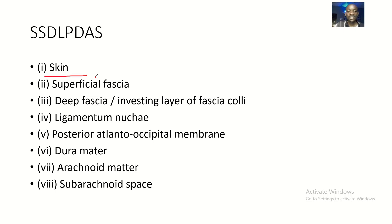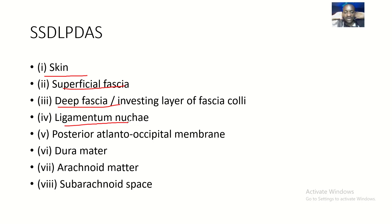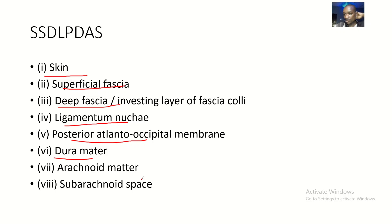Breaking it down: the first S is skin, the second S is superficial fascia, D is deep fascia, L is ligamentum nuchae — because you are talking about the back of the neck. Then P is the posterior atlanto-occipital membrane, D is dura mater, A is arachnoid mater, and S is subarachnoid space.